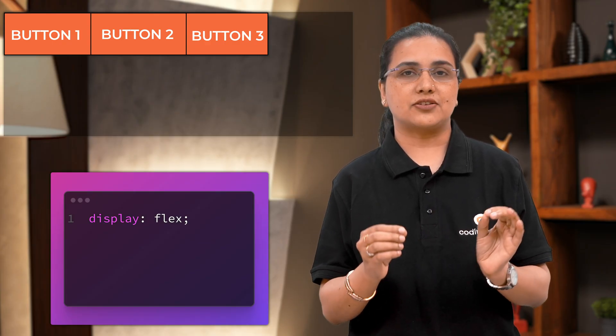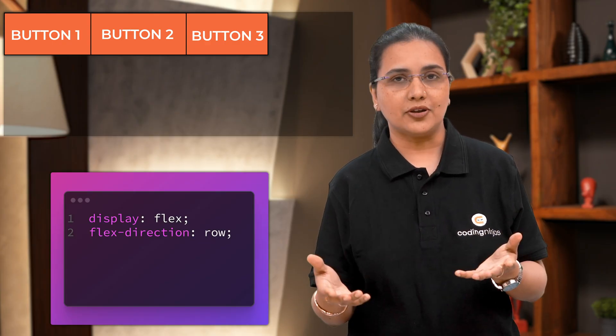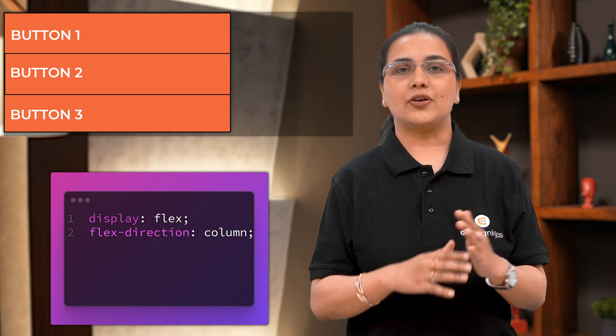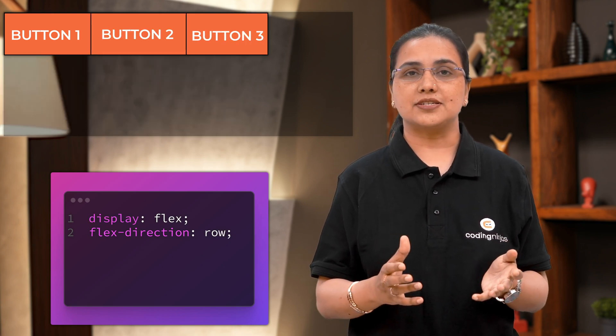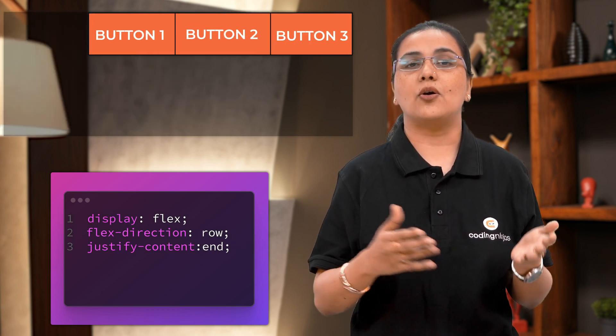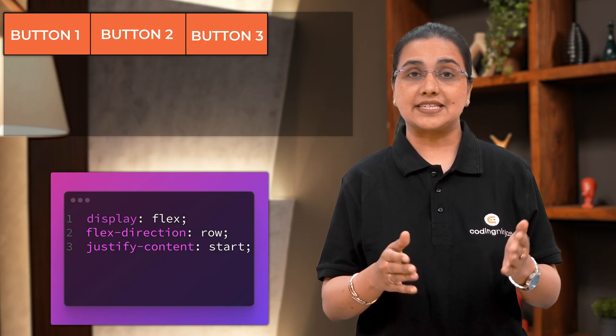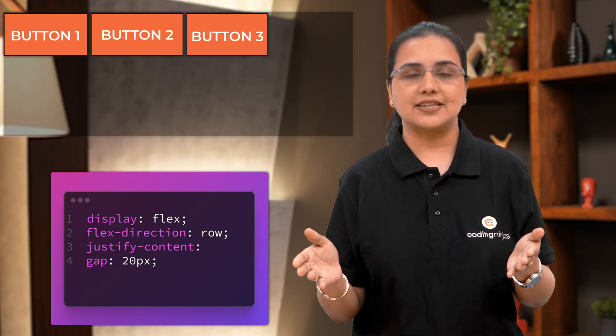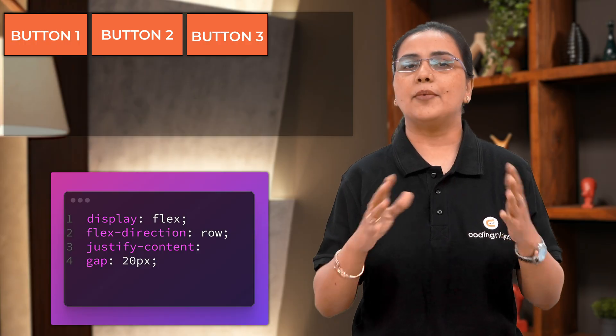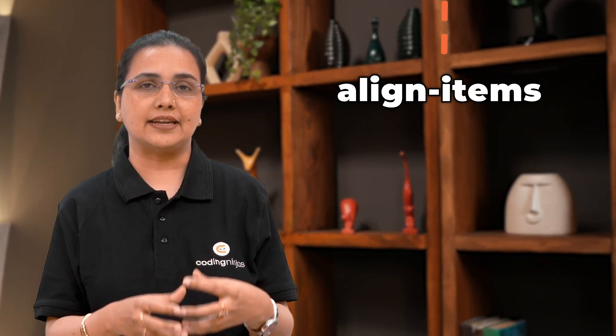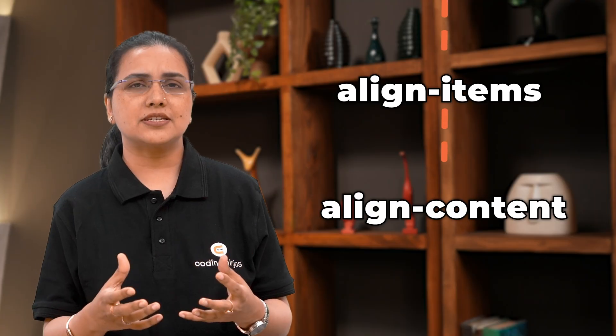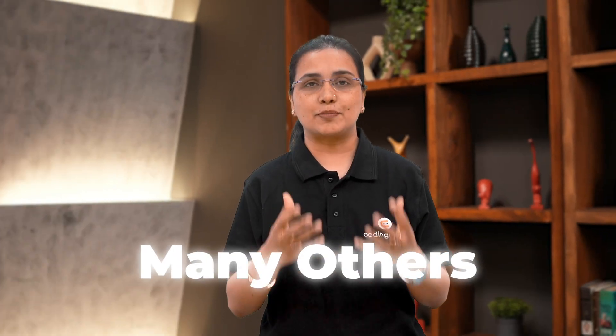With that comes many other properties you can set. You can set flex-direction as row, which is the default, or as column, and your lineup will change. You can also justify-content to center, end, or start, and there are many other options. You can set the gap between components — whether row-gap or column-gap. You also have align-items, align-content, align-self, and many others. Just explore these and you'll see how wonderful Flex is.